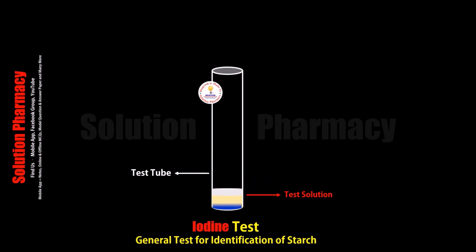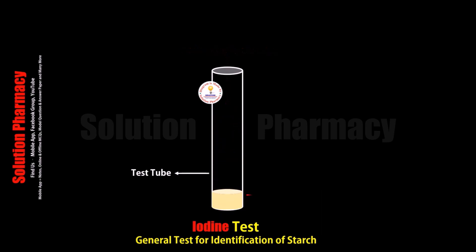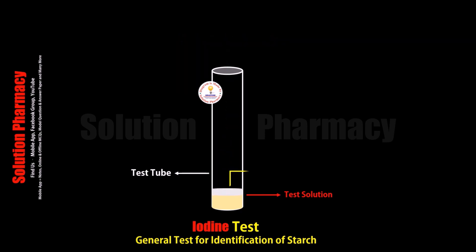The iodine test is the general identification test for starch, which is a polysaccharide. If in any sample we want to detect the presence of starch — whether starch is present or not in our sample — then the iodine test is performed.